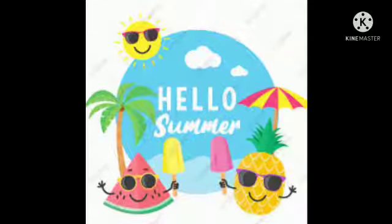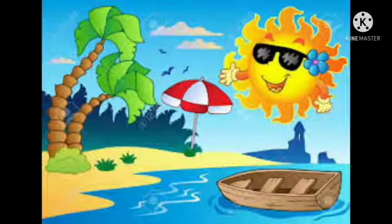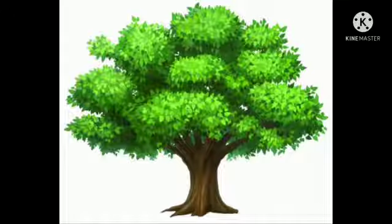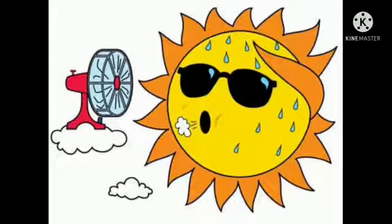Now we will talk about summer season. And now you are watching the scene of summer — यह summer season का scene है. Kids, summer season में trees पर बहुत सारी green-green leaves आती हैं. In summer season, sun shines brightly — summer season में sun बहुत तेज चमकता है जिसके वजह से हमें बहुत गर्मी लगती है.